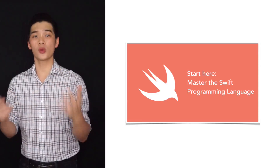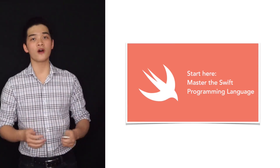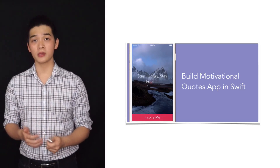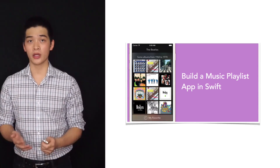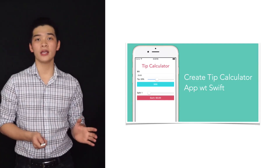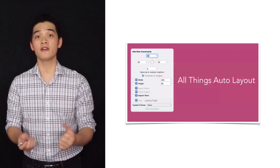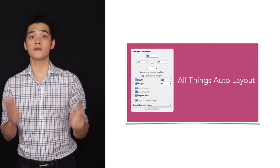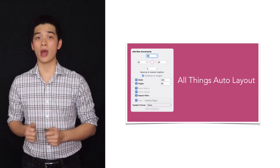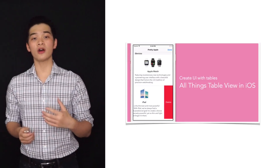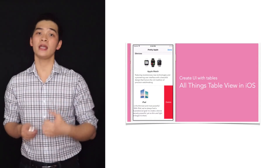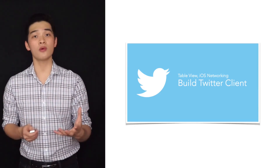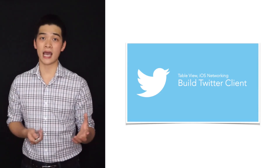First of all, we are going to learn the Swift programming language. Next, we are going to move on to build a motivational quote app, a music playlist app, the tip calculator app. And then we will move on into the world of universal apps, where we will learn AutoLayout — the tool for developers to build universal apps. Then we will move on into displaying data in a table format, and we will use collection view of that table to build a Twitter client app.